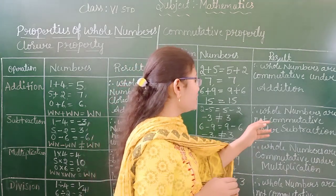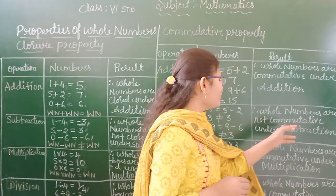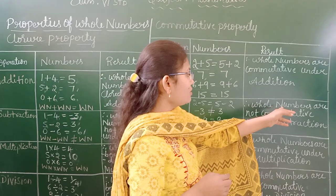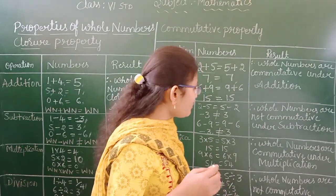So whole numbers are not commutative under subtraction.